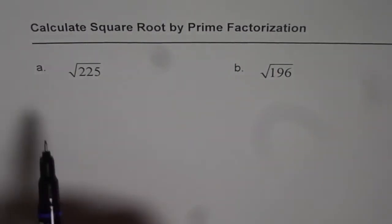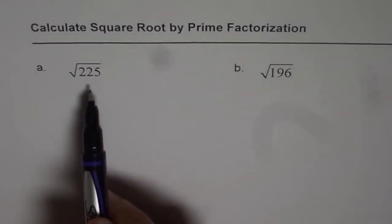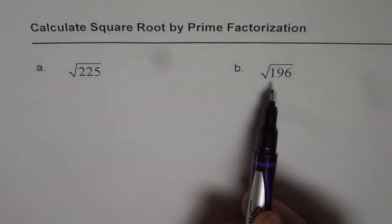We have two examples here. First one is square root of 225, and the second one is square root of 196.